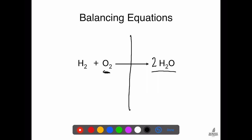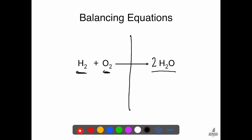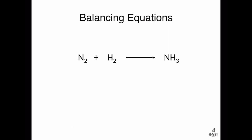Some of you might look at that and say it's balanced — but you're wrong. If we go back to the start, the number of hydrogens has changed. I've got two hydrogen atoms on the left but now four hydrogen atoms on the right. So to get four hydrogens on the left, I stick a two in front of H2. Two times two gives four hydrogens on the left, four on the right, two oxygens on the left, and two on the right — that is balanced.